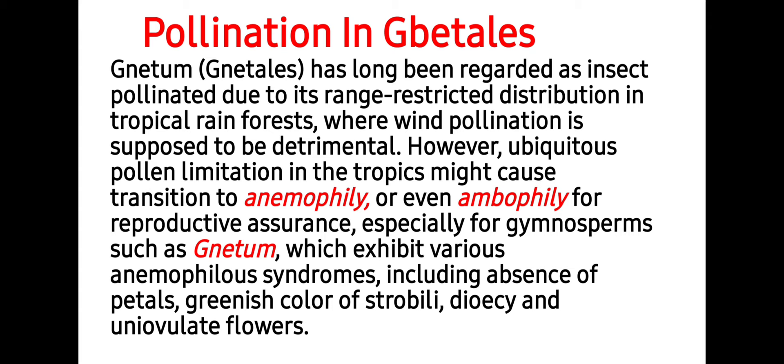Next is pollination in Gnetales. Gnetum has long been regarded as insect-pollinated due to its range-restricted distribution in tropical rainforest, where wind pollination is supposed to be detrimental. Gnetum is restricted to the rainforest, which is why it prefers entomophily. However, ubiquitous pollen limitation in the tropics might cause transition to anemophily or even ambophily — ambophily meaning pollination by both insects as well as wind — for reproductive assurance.